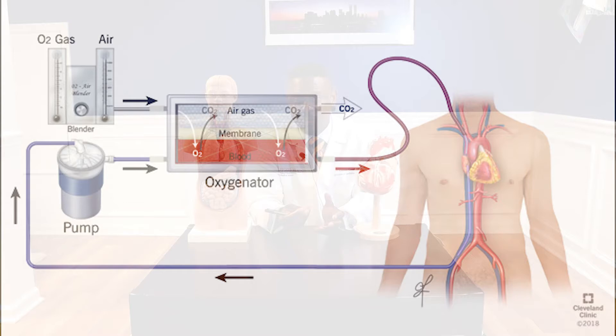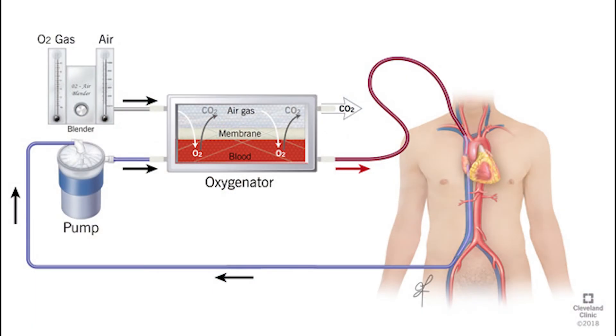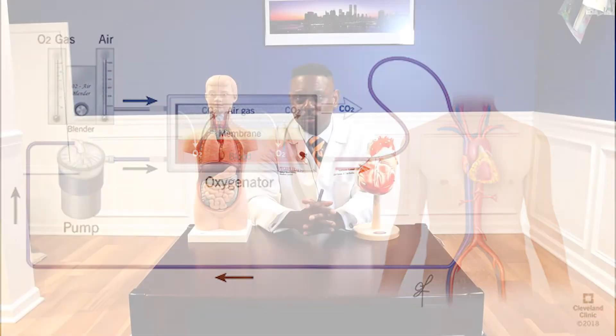We're just going to focus on the patients who have respiratory failure for the purpose of this discussion. The critical aspect of ECMO is that it's taking over the role of the lungs — adding oxygen and removing CO2 from the blood. There are two methods in which we support a patient with ECMO for respiratory failure. Before we get started on that, let's review the anatomy of the heart.